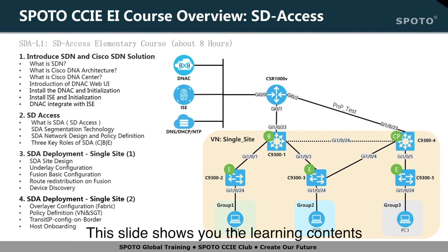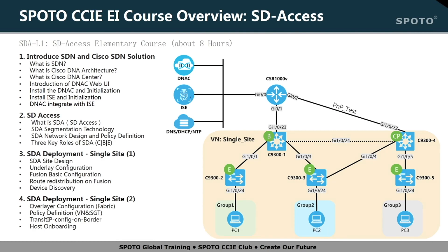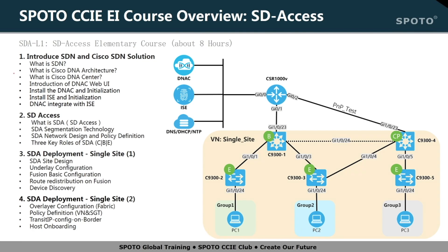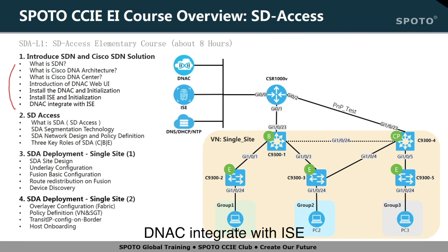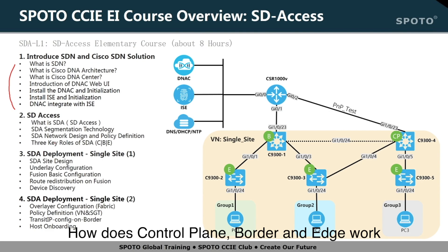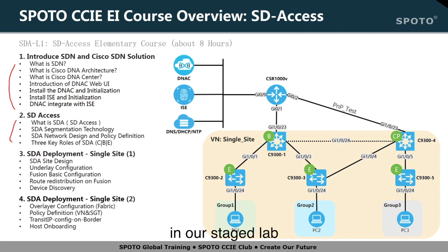This slide shows the learning contents of the SD-Access course at SPOTO. In the SD-Access elementary course, we will spend about 8 hours teaching what is SDN, what is Cisco DNA Architecture, what is DNA Center, introduction of the DNAC web UI, installation and initialization of DNAC and ISE, DNAC integration with ISE, what is SD-Access, how to configure policy, and how the control plane, border, and edge work in SD-Access. Then we will go through how to design and deploy a network based on SD-Access in a single site in our staged lab.